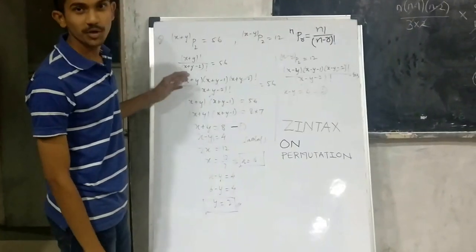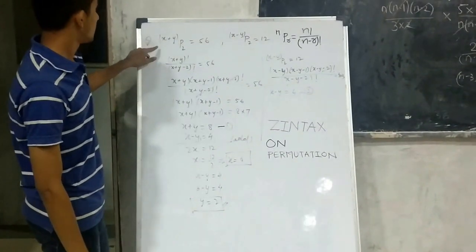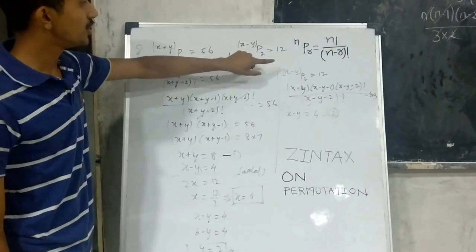Today we are going to see the sum of permutation. So we have given two equations: x plus y P2 is equal to 56 and x minus y P2 is equal to 12.